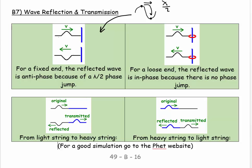And does it get reflected what we call in phase? This is in phase because the crest stays as a crest. Or is it reflected out of phase? Because the crest immediately becomes a trough. What we say is for a fixed end, the reflected wave is anti-phase because of a lambda over 2 phase jump. And for a loose end, the reflected wave is in phase because there is no phase jump.